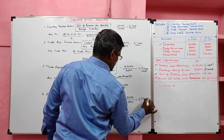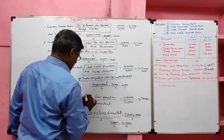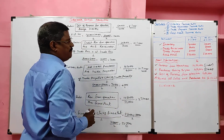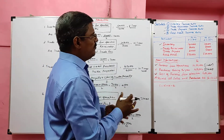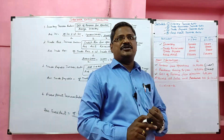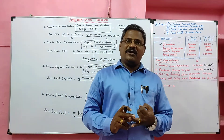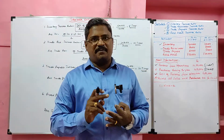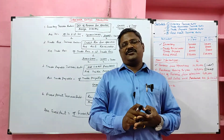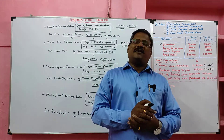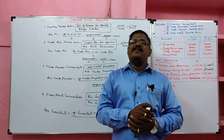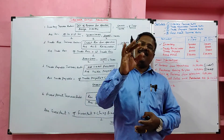Revenue from operation 10,50,000 divided by average fixed assets 5,25,000 — our answer is 2 times. In this problem we solved inventory turnover ratio, trade receivable turnover ratio, trade payable turnover ratio, and fixed assets turnover ratio. We have completed turnover ratios. In the next class we will solve a different problem. Till then, bye and thank you.